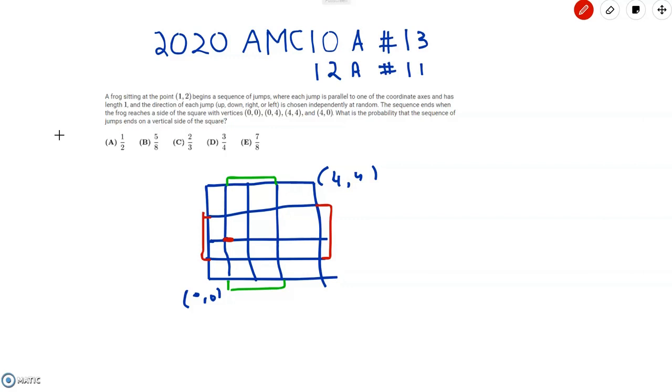First of all, a lot of people got tripped up by this problem because they overcomplicated the situation and resorted to trying to do a state space, which is essentially finding the probability that you could go from every point on the square and relating them in terms of equations.